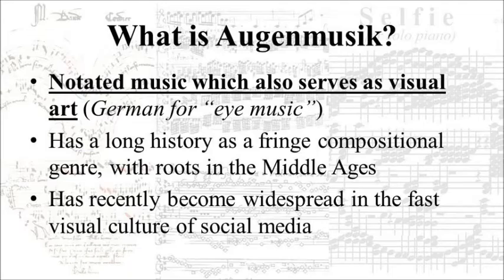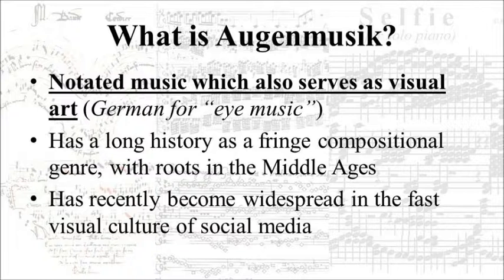First of all, what is Augenmusik? The term is a German word which literally translates into English as eye-music, or music for the eyes. It basically means notated music that also serves as visual art. It has a long history as a fringe compositional genre with roots dating back to the Middle Ages, but in recent years it's found a surprising new life in the fast visual culture of social media.